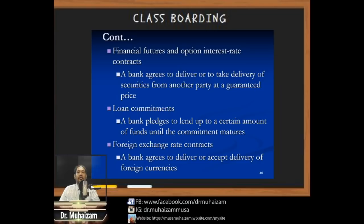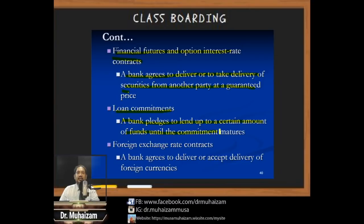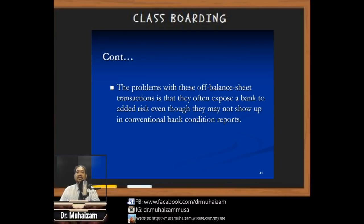Other off-balance-sheet items include financial futures and option interest rate contracts — where a bank agrees to deliver or take delivery of securities at a guaranteed price — loan commitments, where the bank pledges to lend a certain amount until the commitment matures, and foreign exchange rate contracts, where the bank agrees to deliver or accept foreign currencies.